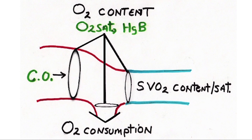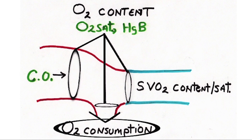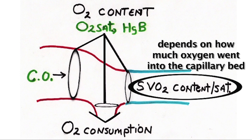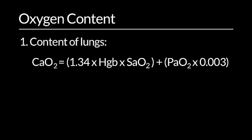Basically, if the capillaries extract a certain fixed amount of oxygen to supply the needs of the tissue, the amount of oxygen left over on the systemic venous side is determined by how much O2 was delivered to the capillary bed. Two factors determine O2 delivery: oxygen content of the lungs, which is related to both arterial oxygen saturation and hemoglobin.